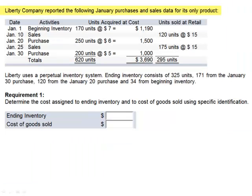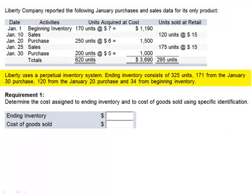Exercise 3. Liberty Company reported the following January purchases and sales data for its only product. Liberty uses a perpetual inventory system. Ending inventory consists of 325 units: 171 from the January 30th purchase, 120 from the January 20th purchase, and 34 from beginning inventory. Requirement 1 asks us to determine the cost assigned to ending inventory and to cost of goods sold using the specific identification method.